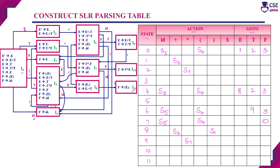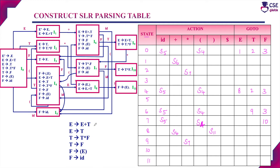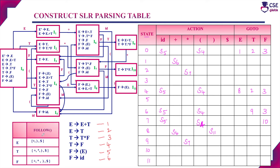Now we must enter the reduce moves. Whenever there is a final item in any state, it is implemented as a reduce move. We number the productions 1 through 6. The key difference between the LR(0) and SLR parsing table is: in LR(0), the reduce move is entered for the entire row of a state with a final item. In SLR, we consider the follow set of the left-hand side non-terminal and enter the reduce move only for those follow set symbols.